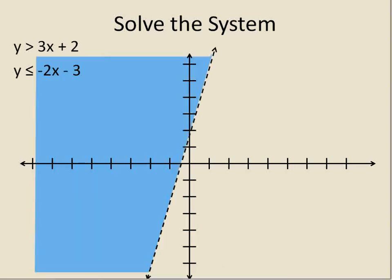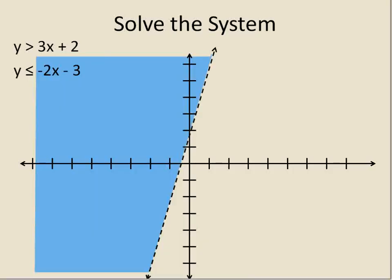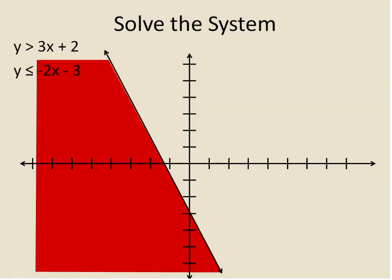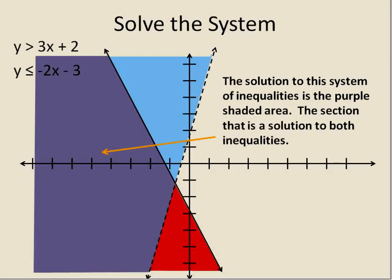So the solution for our first inequality was this. The solution for our second inequality is that. And we could quickly go back and forth between the two and try and see where they cross. The parts that cross are the solutions for our system. But instead, I'm just going to combine them together and shade it in purple where the blue and red would cross. So the solution to this system is the purple shaded section.